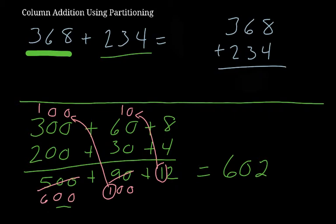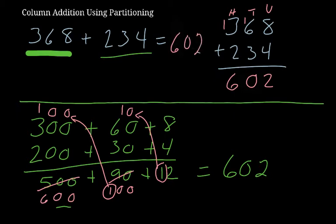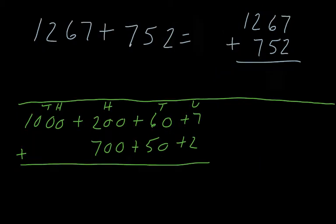So when we write it, it's going to be 600 and 2. Now to check my work using the vertical method — that's tens, that's hundreds — 8 plus 4 is 12, and I carry the set of 10 to the tens column. 60 plus 30 is 90, plus another 10 is 100. I carry the 100 to the hundreds column: 300 plus 200 is 500, plus another 100 is 600. So my answer is 602.